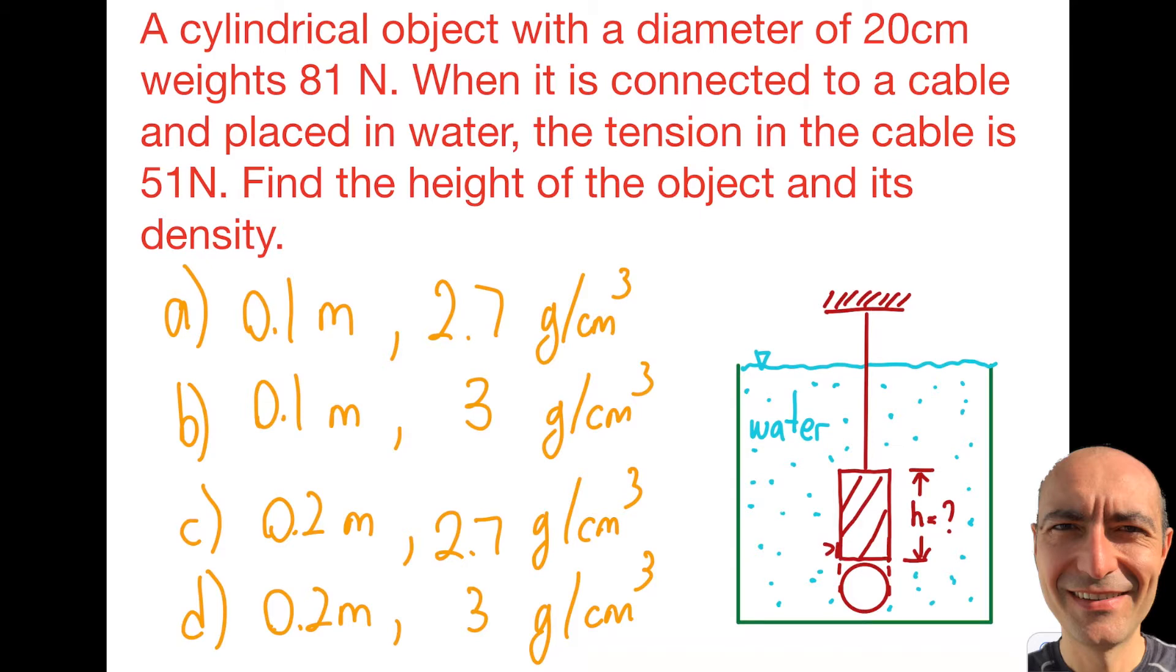In this particular case, I have a cylindrical object. You can see the cross-sectional area. Actually, the diameter is given, so let me note this right here before I forget. That's going to be 20 centimeters diameter. And it's going to weigh 81 newtons.